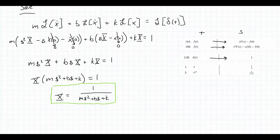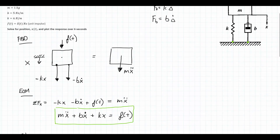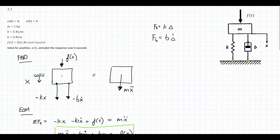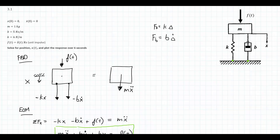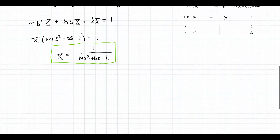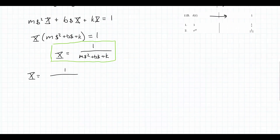Now I apply the parameter values: m equals 1 kg, b equals 5 newton-seconds per meter, and k equals 6 newtons per meter. Substituting in, X equals 1 over s² plus 5s plus 6. This expression doesn't appear directly on the Laplace transform table, so I need to algebraically manipulate it into a recognizable form using partial fraction expansion.